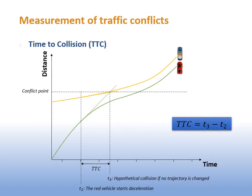To quantify traffic conflicts, the time-space diagram will normally be used. The horizontal axis represents time, while the vertical axis is distance. Therefore, this diagram can be used to represent how a moving object — a vehicle — changes its position along time. The slope of the curve indicates the speed: the higher the slope, the faster the vehicle.